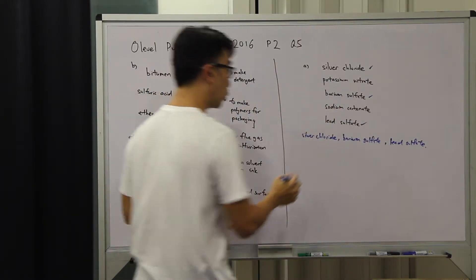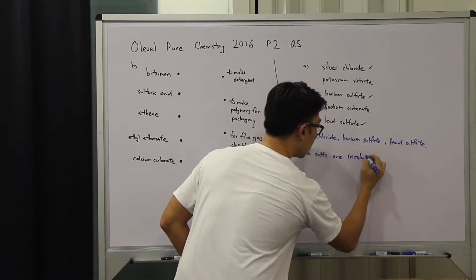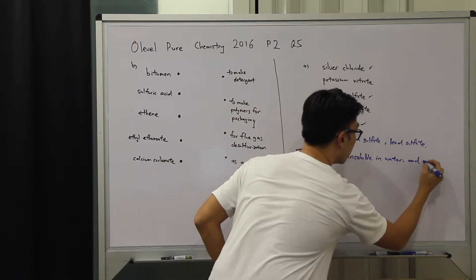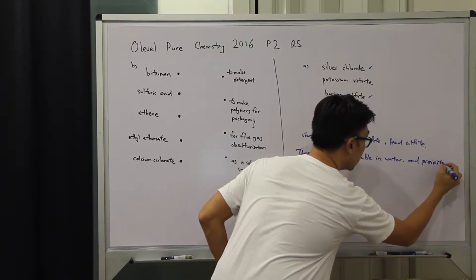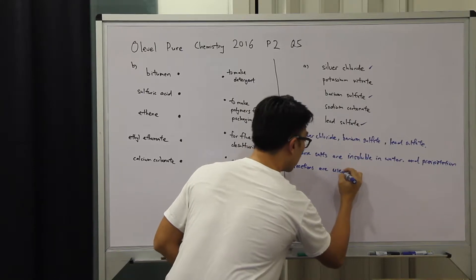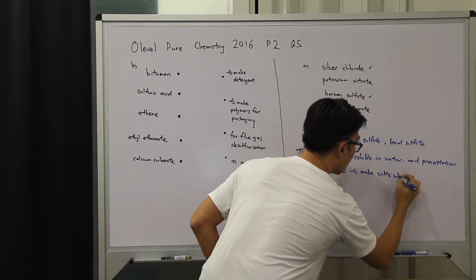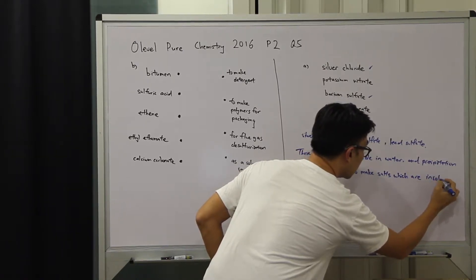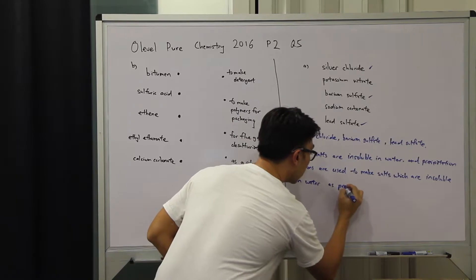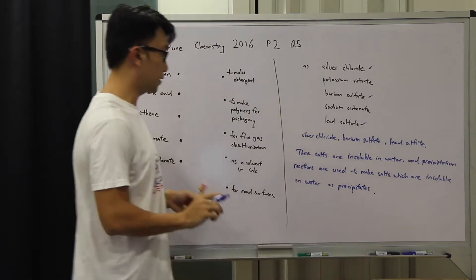The reason why these salts are made by precipitation - precipitation reactions are used to make salts which are insoluble in water as precipitates. So this is the reason and the answer for part A.